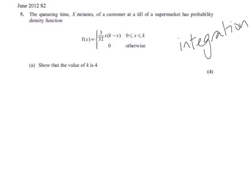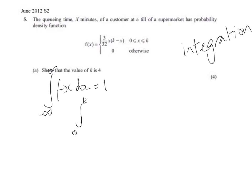What do we know? We know that this function, the integral of the function, is equal to 1. We're going to use that fact in order to find k. So, we're going to do the integral of our function, the lower limit being 0, the upper limit here is k, and we're going to find the integral of the function.